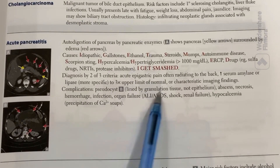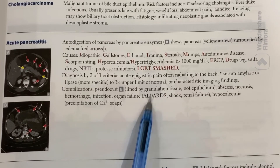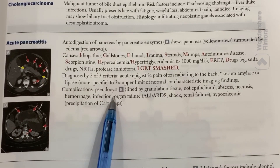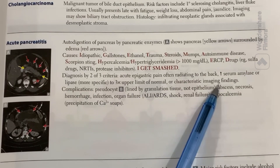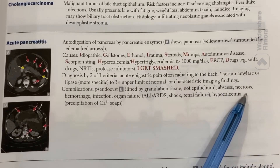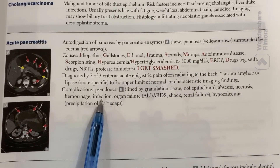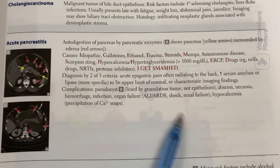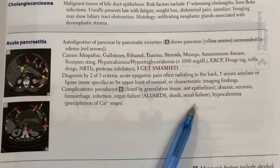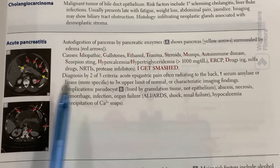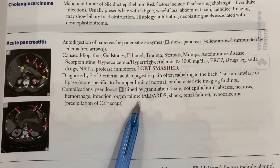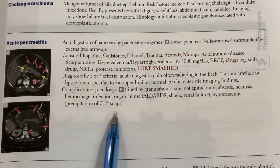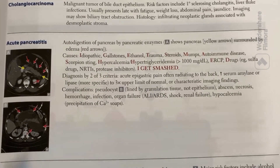Complications include pseudocyst — which has granulation tissue but no epithelial lining — pancreatic hemorrhage, and organ failure. Systemic complications such as ARDS, acute lung injury, and shock can develop. Hypocalcemia also occurs due to calcium soap precipitation.